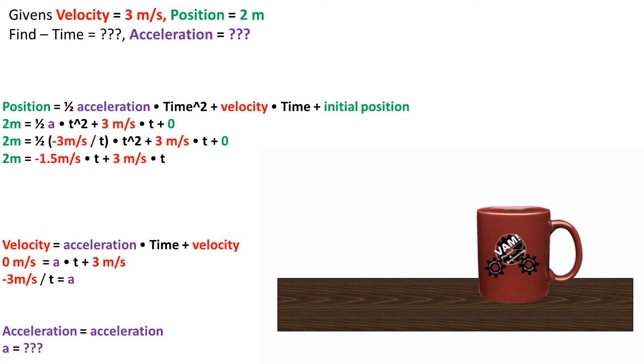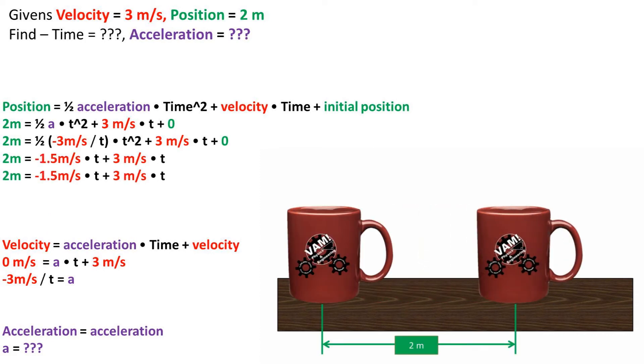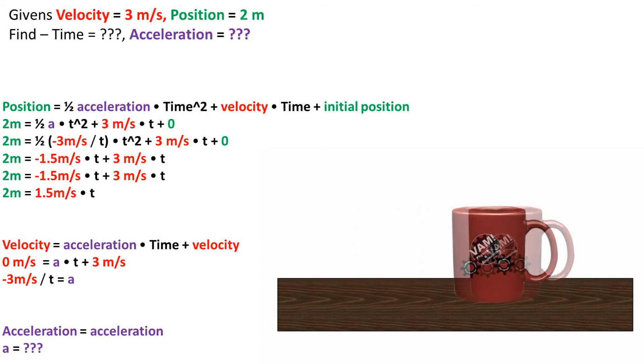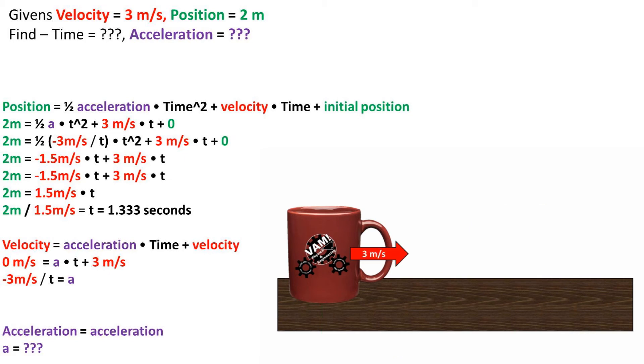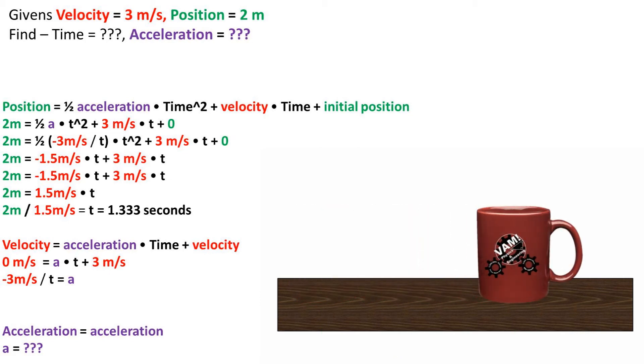Next, we will need to rearrange the position formula to get time to one side. Completing basic algebra, we are left with 2 meters divided by 1.5 meters per second equals time, which equals 1.333 seconds.